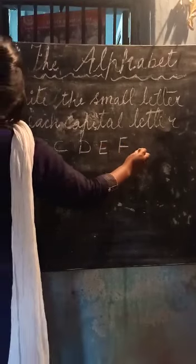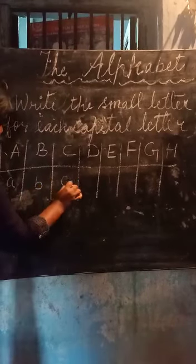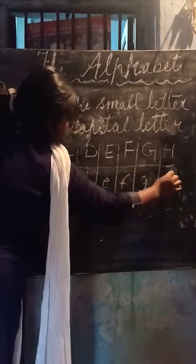Now, see children, here is capital A, B, C, D, E, F, G, H, and here are some boxes. This one is a capital letter and you know what is the small letter of A. So here is the small letter of A, B, C, D, E, F, G, H.